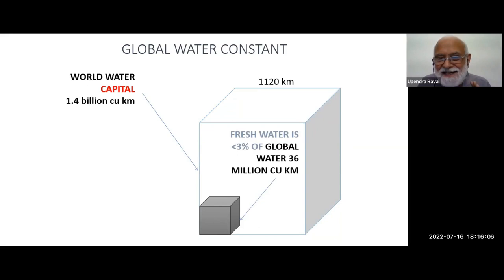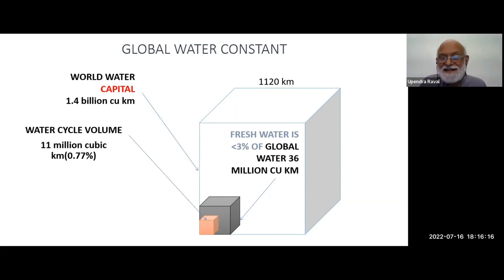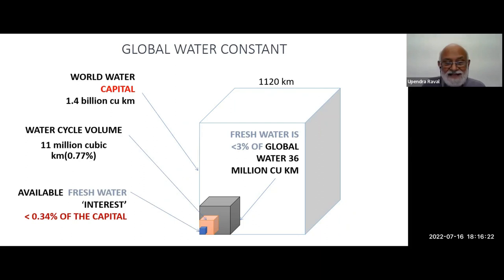Only under 3% of that water is fresh water. The water cycle volume is less than 1% and available water is 0.34%. Now, more than population, our attitude and behavior changes and they put more pressure.